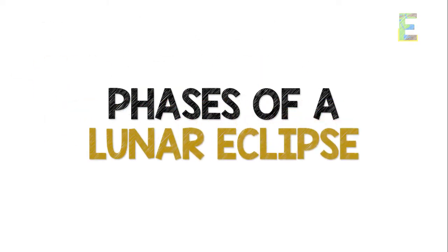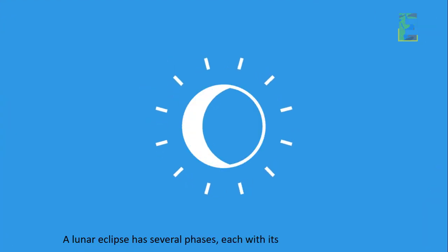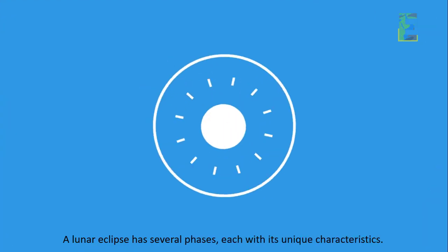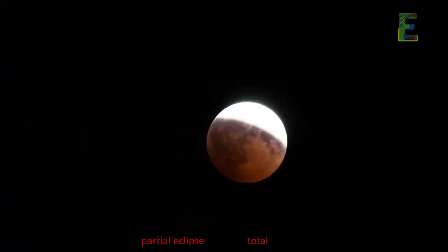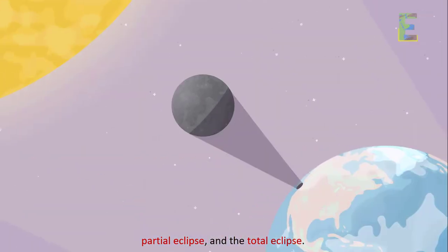Phases of a Lunar Eclipse. A lunar eclipse has several phases, each with its unique characteristics. These phases include the Penumbral Phase, Partial Eclipse, and the Total Eclipse.